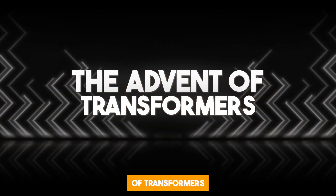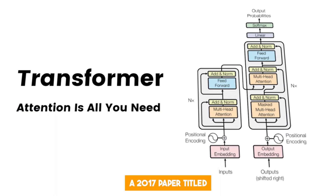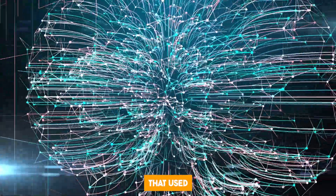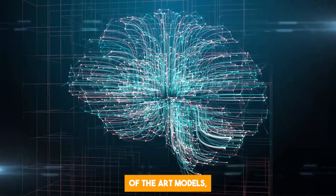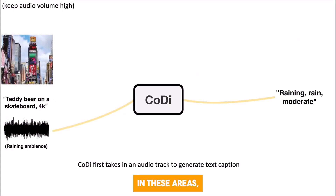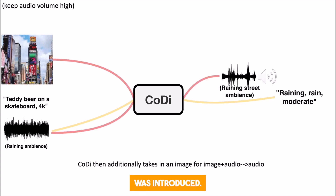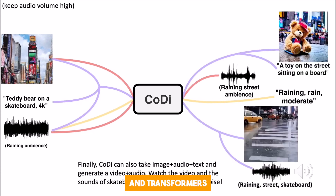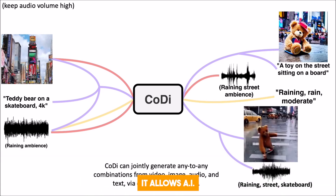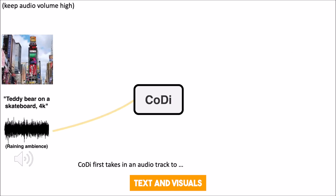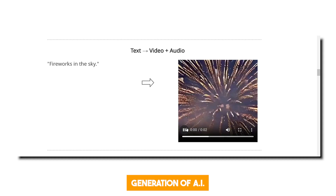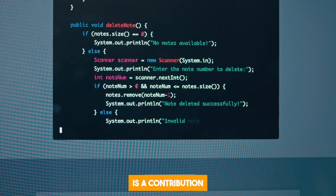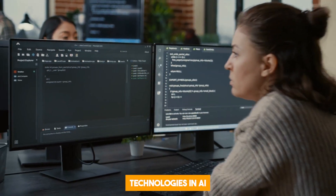Transformers, introduced in the 2017 paper titled 'Attention is All You Need,' changed the landscape of natural language processing. These deep learning models use self-attention mechanisms and have since been used to develop state-of-the-art models, including OpenAI's GPT series. Building upon these advancements, Composable Diffusion or CODI was introduced. CODI uses the strengths of diffusion models and transformers to generate creative content across multiple modalities, allowing AI models to understand and generate audio, text, and visuals together — representing a continuous advancement and integration of diverse technologies in AI and machine learning.